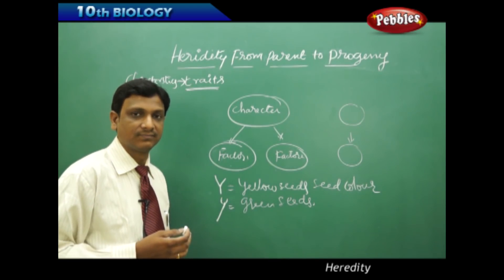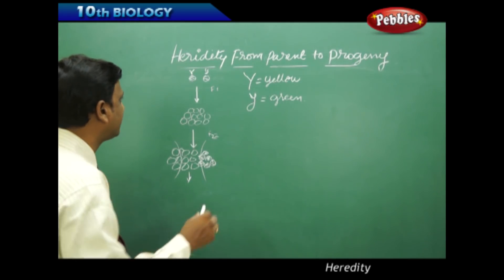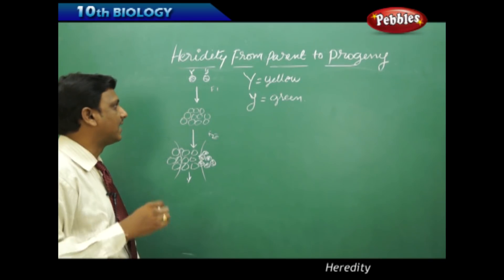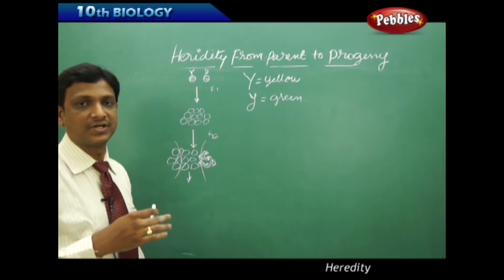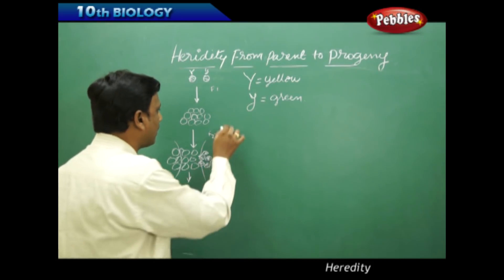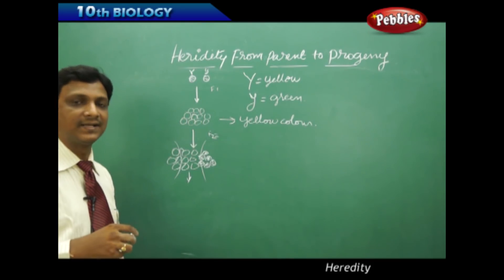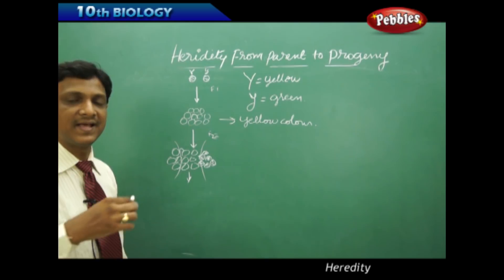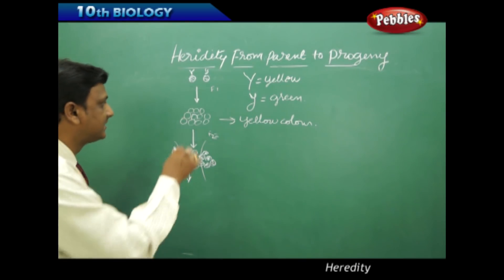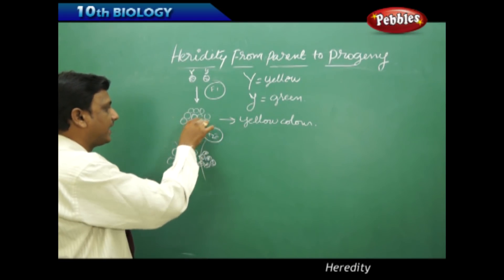Now let us see the results in each generation — how the seeds and their colors came about. Mendel selected one yellow color seed and one green color seed, and took these under cross pollination. In the first generation progeny, whatever seeds were produced, all are of yellow color. It does not mean that the green color is missing — it is still there inside the traits, inside the characters, but it is a recessive character. Yellow color is the dominant character in this generation.